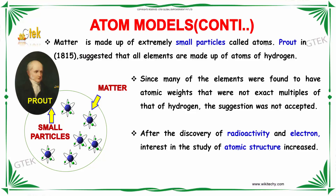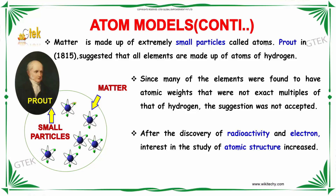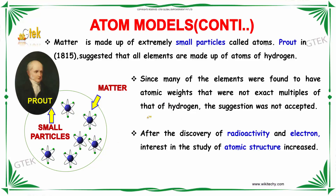Matter is made up of extremely small particles called atoms. Prout, in 1815, suggested that all elements are made up of atoms of hydrogen. Since many of the elements were found to have atomic weights that were not exact multiples of the hydrogen atom, the suggestion was not accepted.